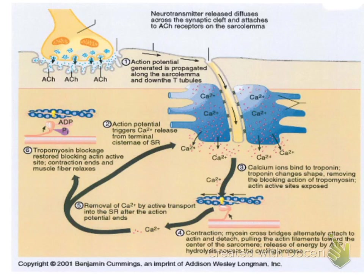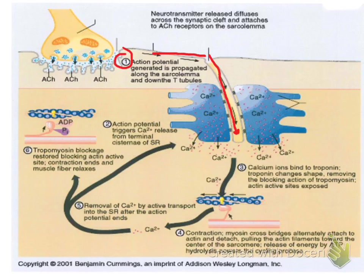As the action potential spreads throughout the sarcolemma or plasma membrane of the skeletal muscle cell, this electrical current travels down specializations of the plasma membrane called T-tubules. The T-tubules bring this electrical current change down into the sarcoplasm and stimulate other voltage gates located in the sarcoplasmic reticulum. Because of the electrical change, these gates open at what are called the terminal cisternae, and they end up releasing calcium ions into the sarcoplasm.